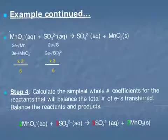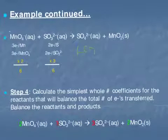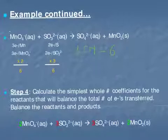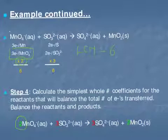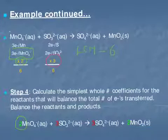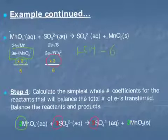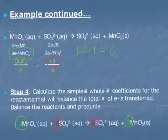Our next step is to determine the lowest common multiple between 3 and 2, which is 6. That means 6 electrons will be transferred in total. To get 6 electrons from permanganate, we need 2 molecules of permanganate, so the coefficient in front of permanganate is 2. To get 6 electrons given up by sulfite, we need 3 molecules of sulfite, so the coefficient in front of sulfite is 3. To balance the product side, we need 3 sulfate and 2 MnO₂.